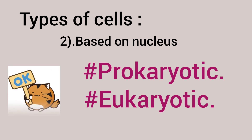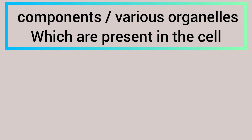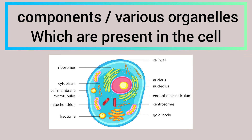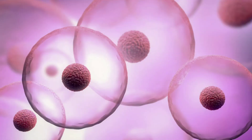What are the components present in a cell? The various organelles present in the cell are: cell wall, nucleus, nucleolus, endoplasmic reticulum, centrosomes, Golgi body, ribosomes, cytoplasm, cell membrane, microtubules, mitochondria, and lysosomes. These are the components of the cell, and in upcoming videos we will see the structure of each.